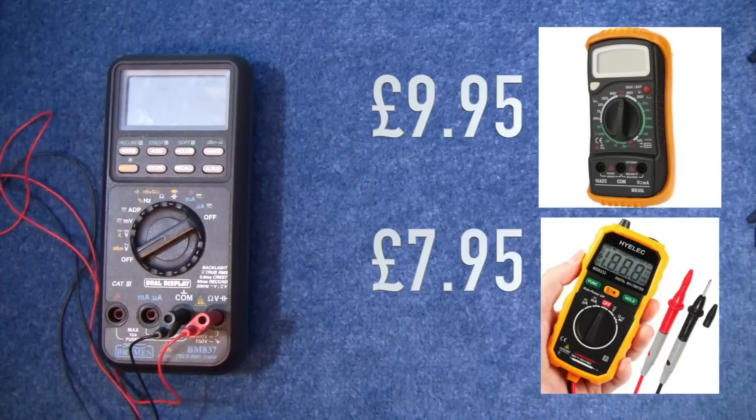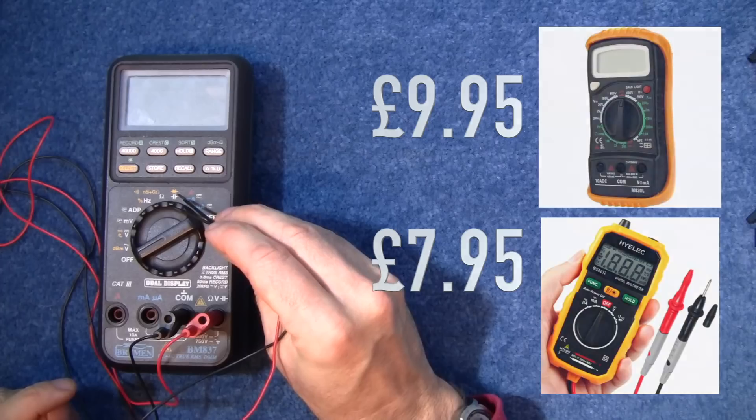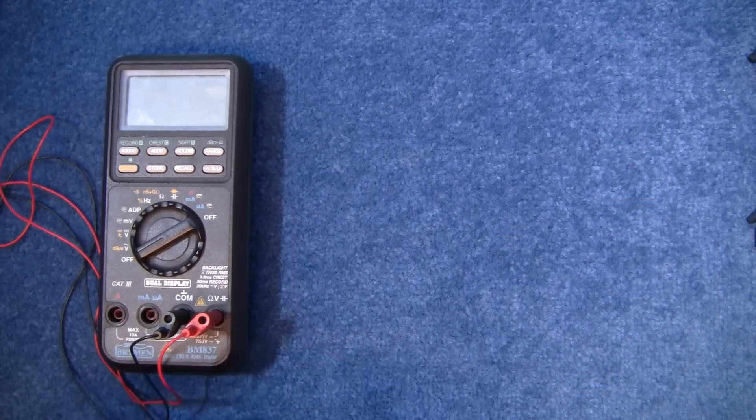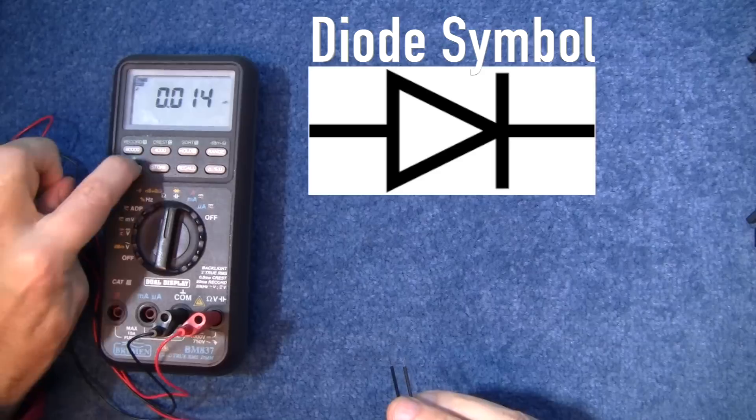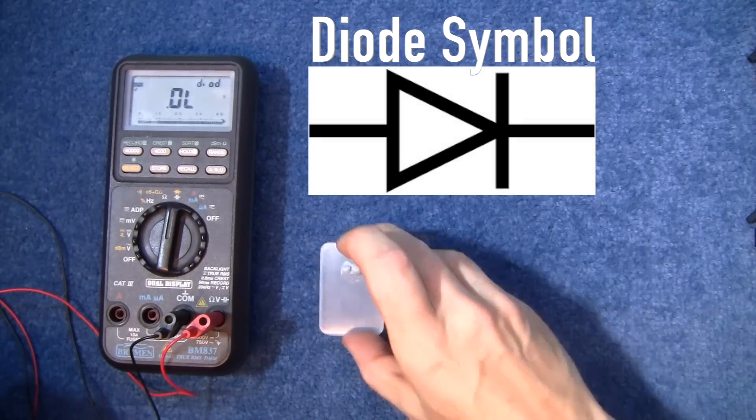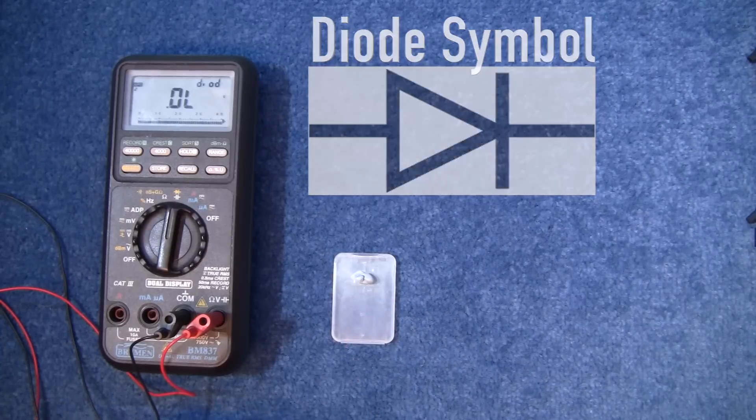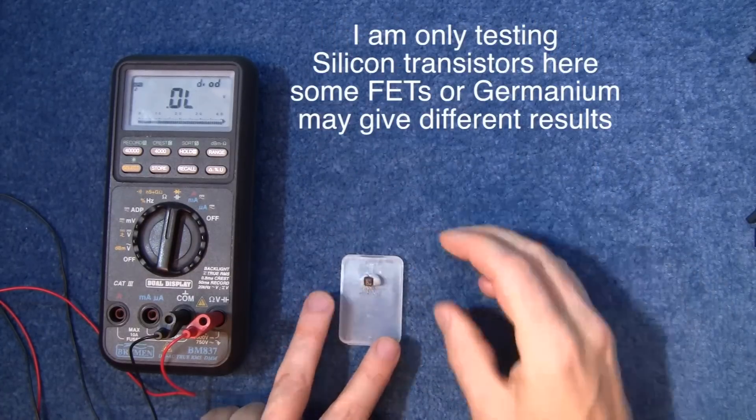Most multimeters now have a diode checker on it, even the cheap multimeters. So we're going to switch the multimeter to diode check and that's just a little bit of BluTac and here's a transistor for us to test.